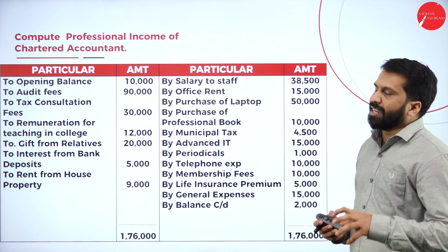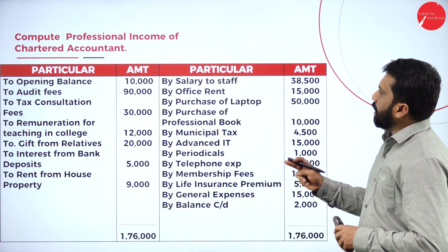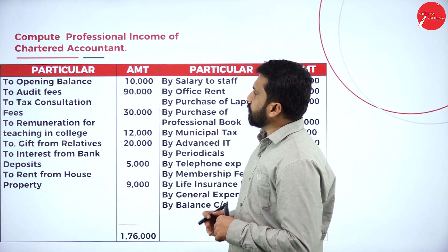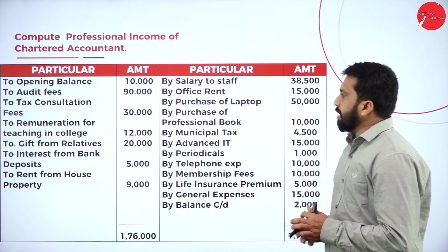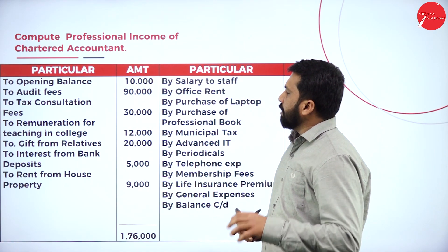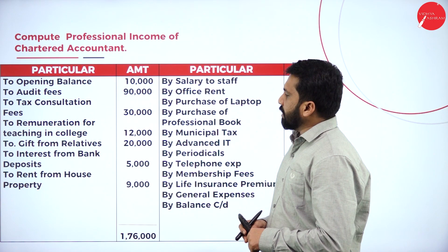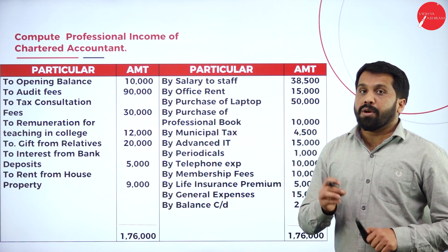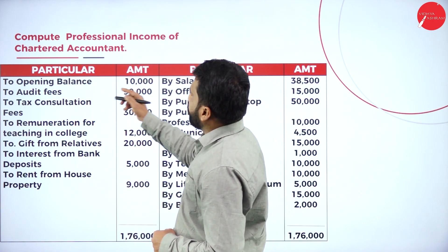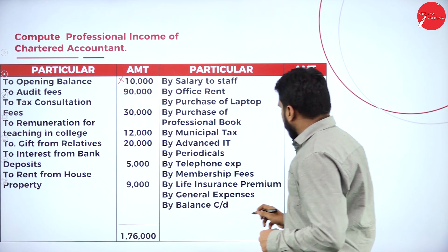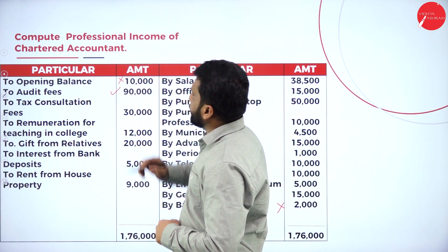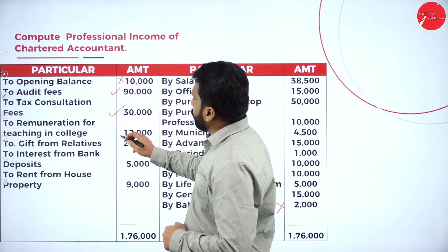Professional income of chartered accountant — the information we have includes: opening balance 10,000, audit fees 90,000, tax consultation 30,000, remuneration for teaching in college 12,000, gift from relatives 20,000, interest from bank deposit 5,000, rent from house property. You have to check carefully which are professional and which are not. Opening and closing balance is not part of your profession.